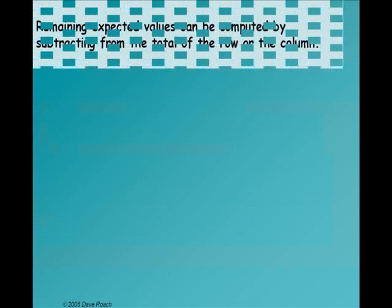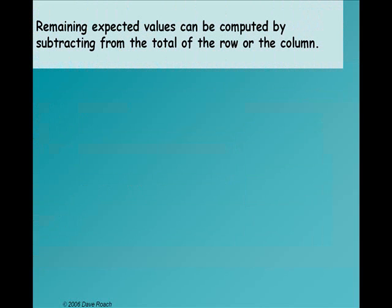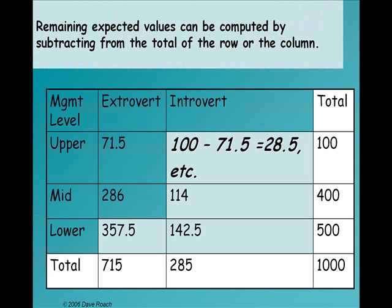And once we have those two, the rest of them we can just get by subtraction and addition. In other words, if we had 71.5 upper managers, and we knew there were a total of 100, then that only leaves 28.5. And so we can compute the rest of them similarly.